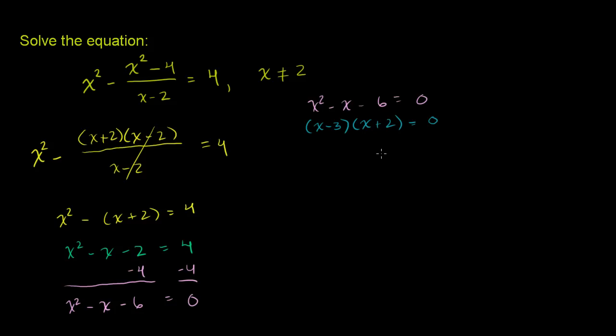So we have two possible ways to get 0. Either x minus 3 is equal to 0 or x plus 2 is equal to 0. If we add 3 to both sides of that equation, we get x is equal to 3. Or if we subtract 2 from both sides of this equation, we get x is equal to negative 2.